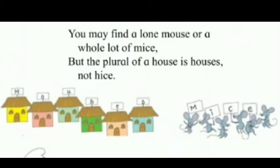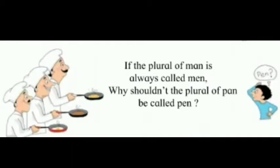The meaning here is: if mouse becomes mice, you might think house would also follow the same rule. But no, it does not. This is a different rule. Mouse is singular, mice is plural. House is singular, and the plural form is houses. Hives is not the plural of house.